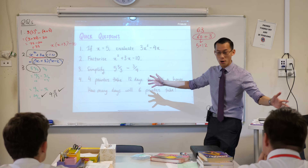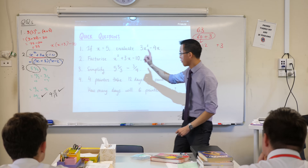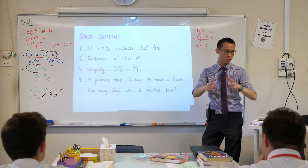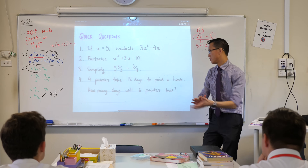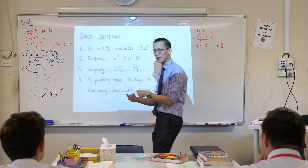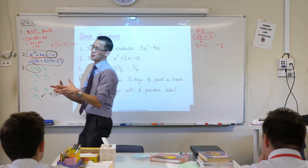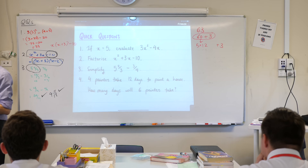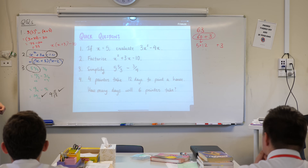These painters are trying to do a job. Four of them take 12 days — almost two weeks — to do it. So what we're asking now is: how many days would it take if I increase the number of painters to six instead of four?